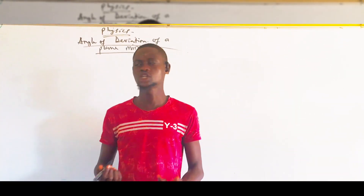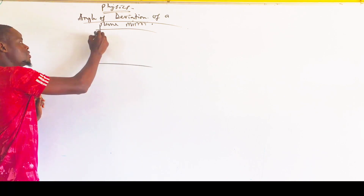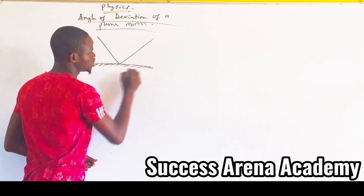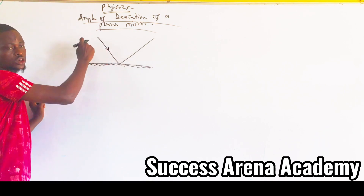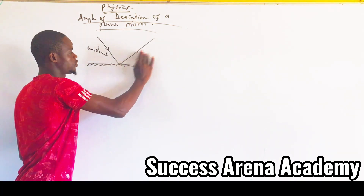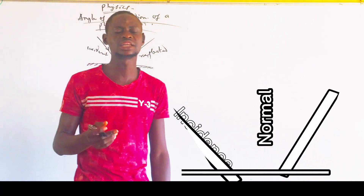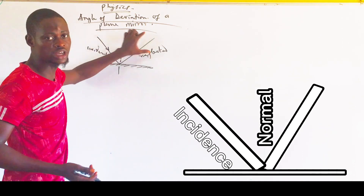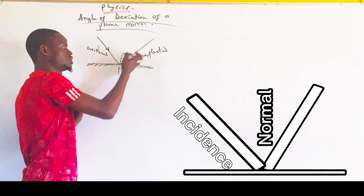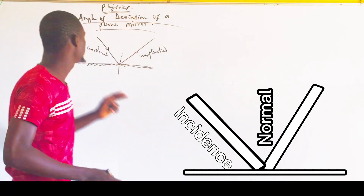Now, what is the angle of deviation in a plane mirror? A ray coming directly from a source to a mirror is known as an incident ray, and a ray leaving a mirror is known as a reflected ray. There is a law known as the law of reflection: the angle of incidence is equal to the angle of reflection. The incident ray, reflected ray, and the normal to the surface all lie on the same plane.